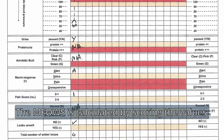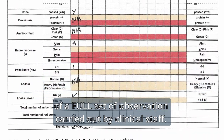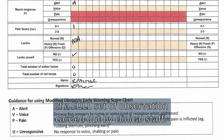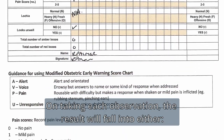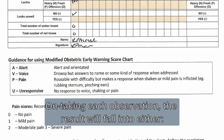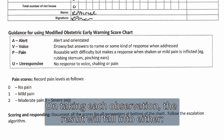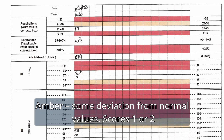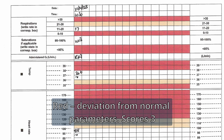The MEOWS is calculated by scoring the values of a full set of observations carried out by clinical staff. On taking each observation, the result will fall into either white — normal, with a score value of zero; amber — some deviation from normal values, scoring one or two; or red — deviation from normal parameters, scoring three.